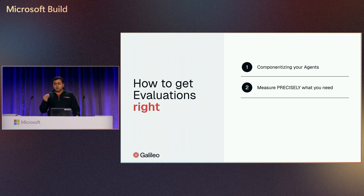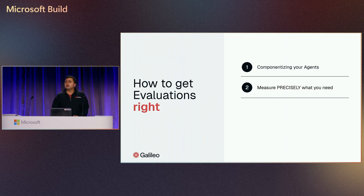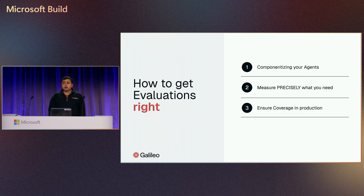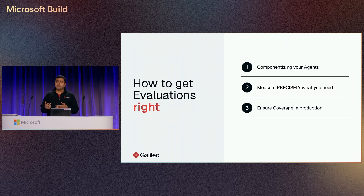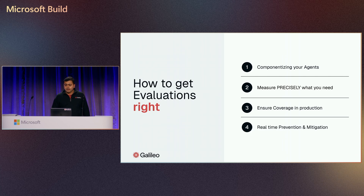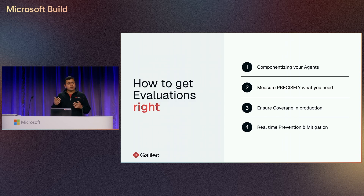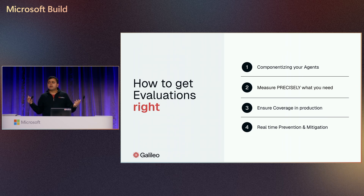The second step is when we build these agentic components, we want to make sure that we are measuring precisely what we need the agent to be doing for us. Third is ensuring coverage in production. We all know about test coverage and CI/CD in the pre-production phase, but with non-determinism, having good test coverage in production is key. And lastly, with real-time prevention — for example, a hallucination detection task — if we can detect hallucinations reliably at high accuracy and prevent them in real-time in under 200 milliseconds, that's where we're headed at Galileo.